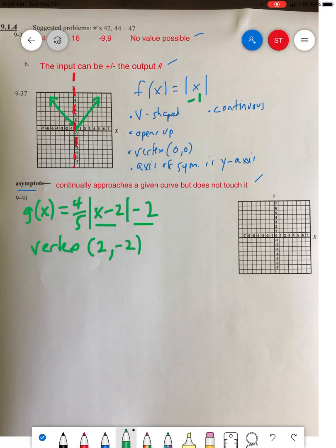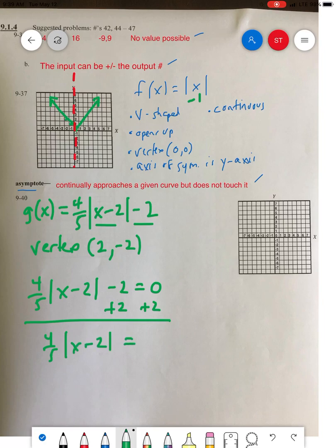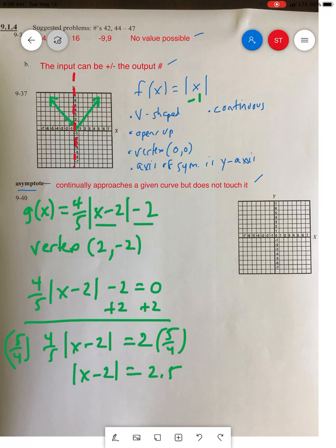How do you find the x-intercepts? You have to solve for x. Take 4/5 times the absolute value of x minus 2, minus 2, and set it equal to 0. First, add 2 to both sides, so you get 4/5 times the absolute value of x minus 2 equals 2. To get rid of this fraction, multiply by the reciprocal on both sides. Now we're left with absolute value of x minus 2 equals 10 over 4, which is 2.5.